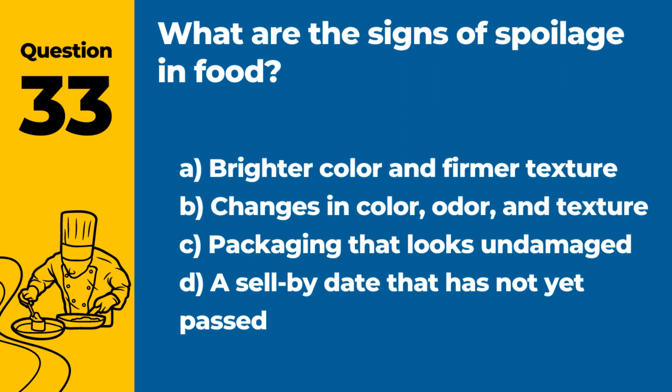Question 33. What are the signs of spoilage in food? Answer: B. Changes in color, odor, and texture. These changes can indicate that food is no longer safe to consume.